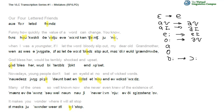Let's now look at roticity and mark those mistakes where a post-vocalic R was used which shouldn't be there. For example, in 'four' — 'four-lettered friends' — the R must go away. Whereas in 'dear old grandmother' this is fine. And it's also fine down here — it's a linking R in 'never even'.